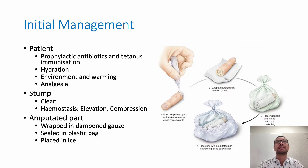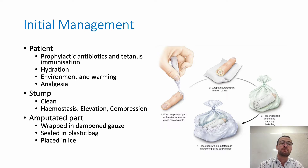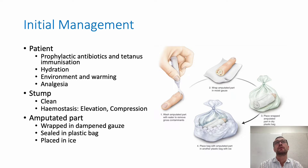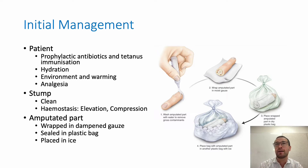If we do get a patient with an amputated digit or hand, initial management to try and increase the chances of re-implantation includes, from a patient perspective, making sure that prophylactic antibiotics and tetanus immunisation are on board, hydrating the patient, making sure that it's a warm environment, and giving adequate analgesia. With the stump, it's important to clean it and get haemostasis if possible with elevation and compression. With the amputated part, again clean it, followed by wrapping it in dampened gauze, then sealing that in a plastic bag, and then placing the sealed plastic bag on ice, taking care not to freeze the amputated part — we want to keep it cool.